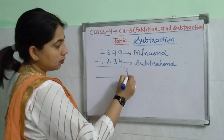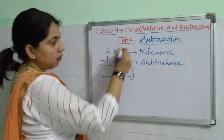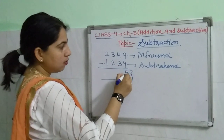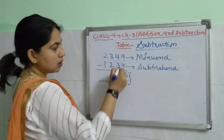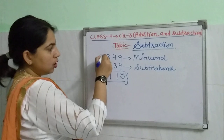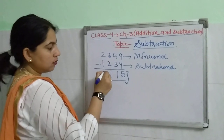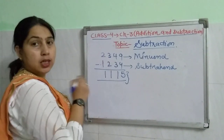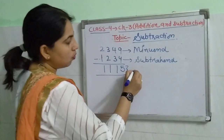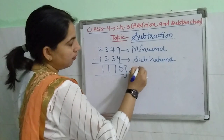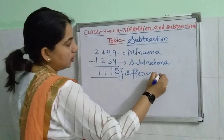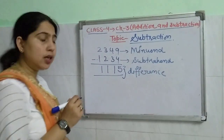And the answer: we will get 9 minus 4 is 5, 4 minus 3 is 1, 3 minus 2 is 1, 2 minus 1 is 1. This is our answer, and this answer is called the difference.